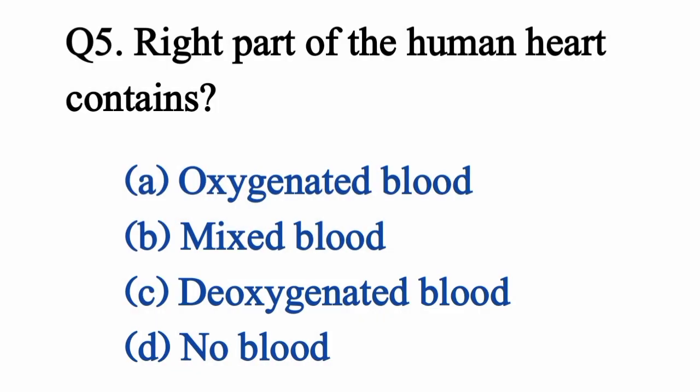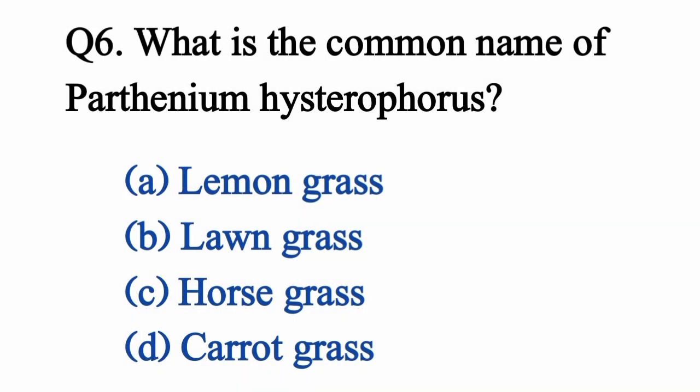Question 5: Right part of the human heart contains... Correct option C: Deoxygenated blood. Question 6: What is the common name of Parthenium hysterophorus? Correct option D: Carrot grass.